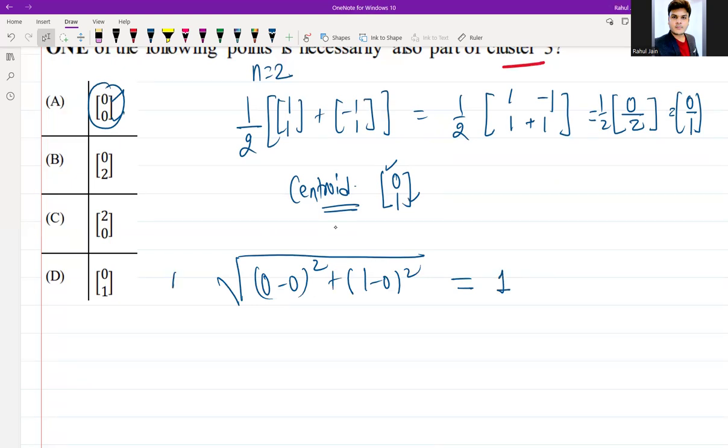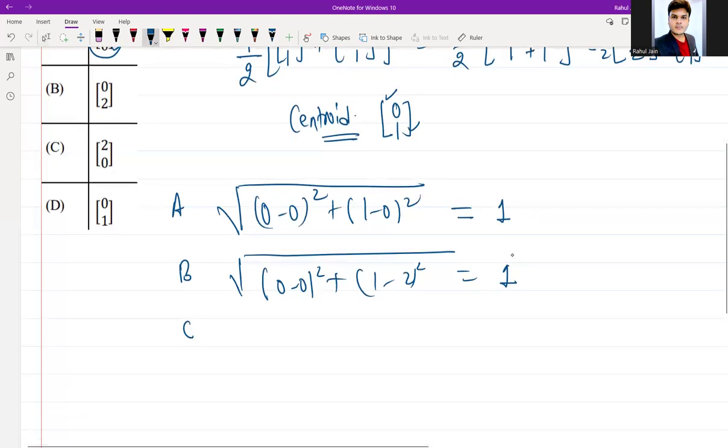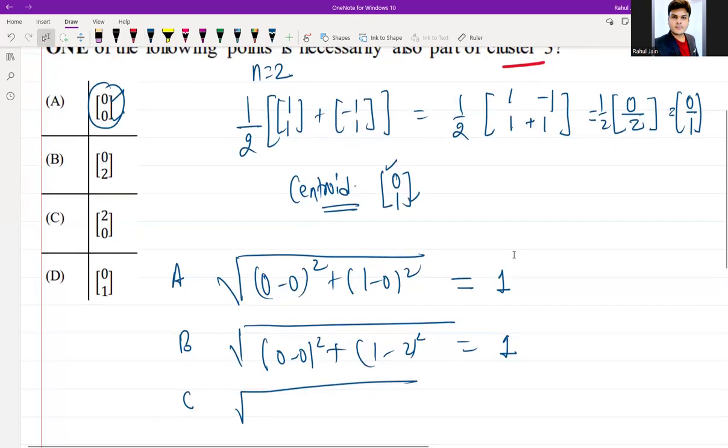Option B, if you calculate, then again (0-0)² plus (1-2)², that is also going to be 1 at the end. And option C, if you calculate, then (0,2), that is (0-2)² plus (1-0)².